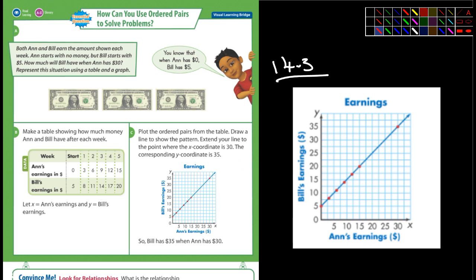It says plot the ordered pairs from the table, draw a line to show the pattern. This is what I'm reading right here. Extend the line to a point where the x coordinate - and you should know by now this is your x coordinate down here, or that's the x axis I should say - and so here's the y axis right there.